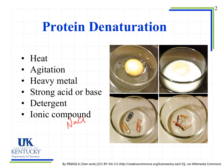Ionic compounds can also cause denaturation — something like sodium chloride, or table salt. If we add that to certain proteins, it will start to break them down, because those ions will dissociate, and the Na⁺ and Cl⁻ will start to interact with different portions of the proteins and interfere with those interactions.